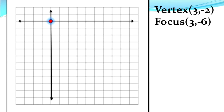The vertex is (3, -2), which means it is in the fourth quadrant. The origin is at (0, 0). Since the x-coordinate is positive 3 and the y-coordinate is negative 2, the vertex is at that intersection point.